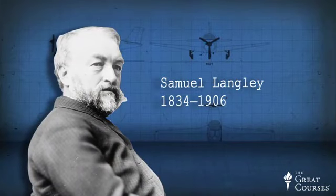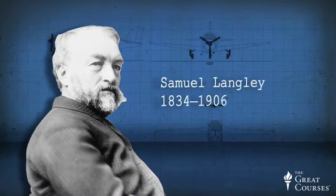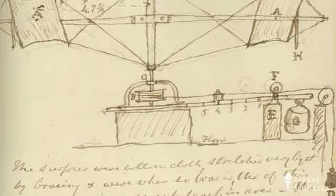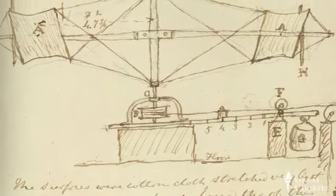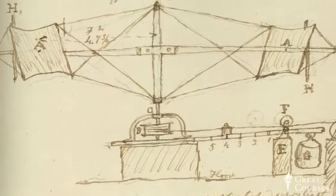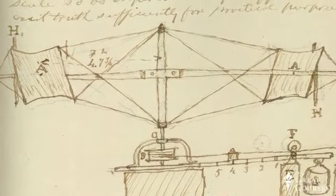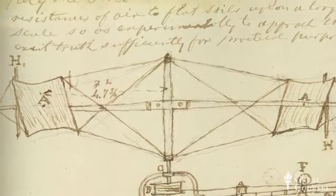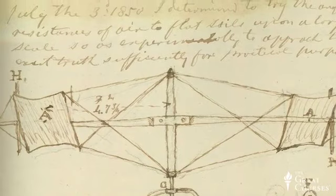For example, Samuel Langley was one of the first experimentalists to develop such devices in the late 1800s. The key disadvantage of the whirling arm, however, is that the model passes through its own wake, leading to disturbed flow that alters the measured forces. This limitation led to dissatisfaction with the whirling arm concept, and ultimately led aeronautical engineers to develop wind tunnels.